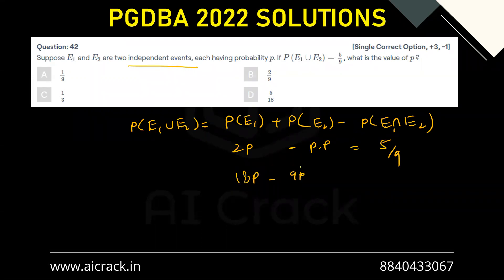So that would give me 9p² minus 18p plus 5 equals zero. We'll have 9p² minus 15p minus 3p plus 5 equals zero.